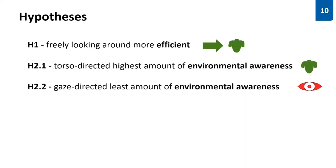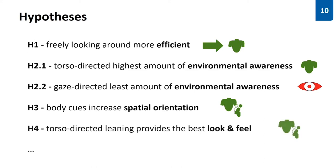So, here's a shortened list of things we expected to show up. First, we expected that the ability to look around leads to more efficiency when it is a relative motion task. This would show up in torso and pointer-directed steering. Second, we expected that moving around with your own physical body, this means torso-directed, generates more environmental awareness than gaze-directed at the other end. Third, we expected that with the number of body cues, also the level of spatial awareness increases, which leads to torso-directed leaning should work the best. Fourth, we expected torso-directed leaning having also the highest head-on equality, which just means it feels the best.